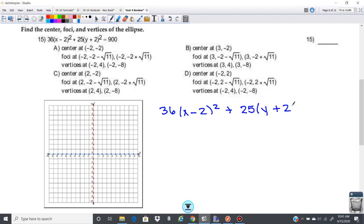36(x - 2)² + 25(y + 2)² = 900. So let's go ahead and set this equal to 1, so we're going to divide everything by 900. 36 over 900 is going to reduce to 1 over 25. 25 over 900 is going to reduce to 1 over 36. And then this is going to reduce to 1.